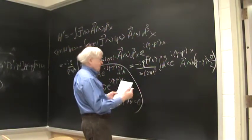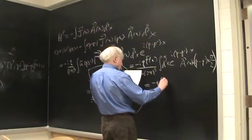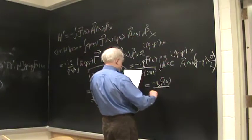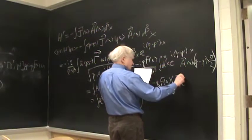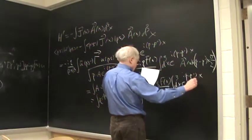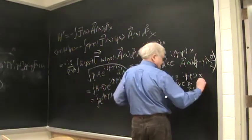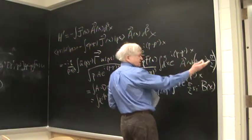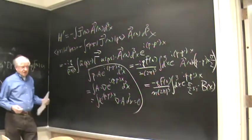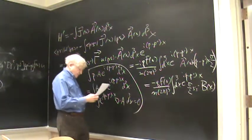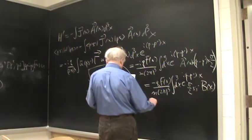p minus p prime cross sigma and because of the structure there of the cross product this turns out to be minus q f of 0 over m 2 pi cubed integral d cubed x e to the i p minus p prime dot x sigma over 2 s prime s dot b of x. So curl, the curl when you integrate by parts and take into account the epsilon ijk you get a curl of a rather than a divergence of a that gives you b.